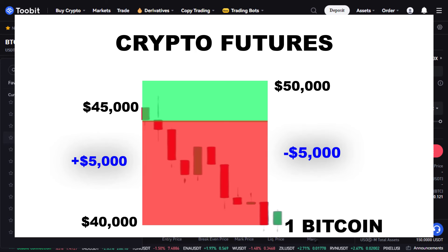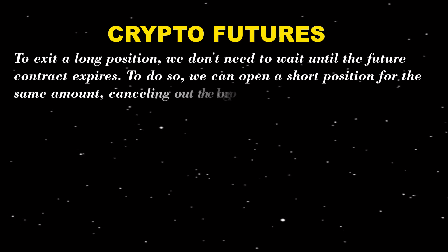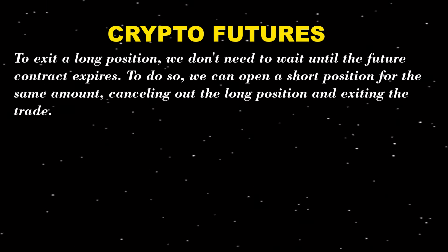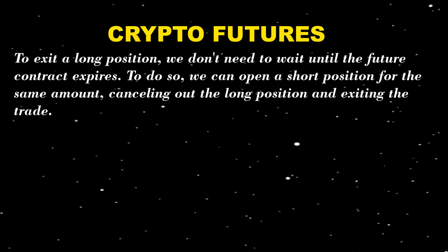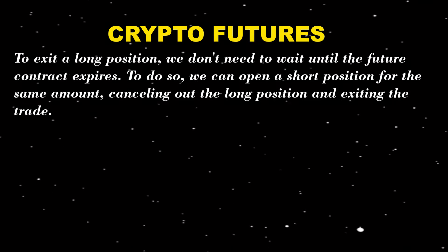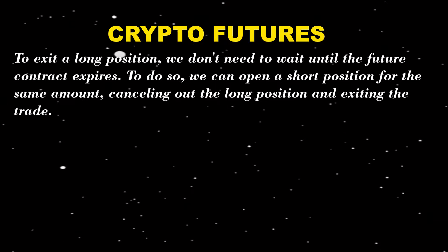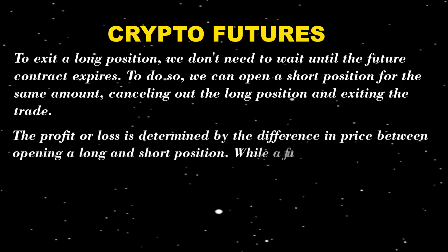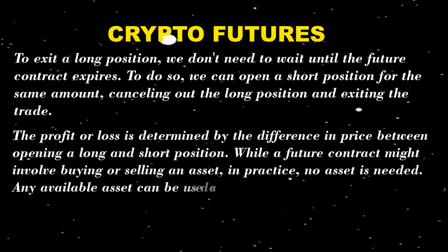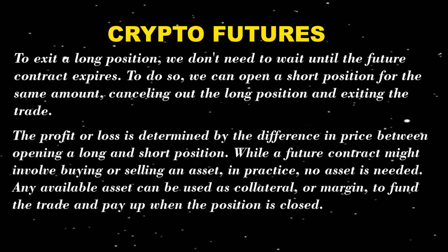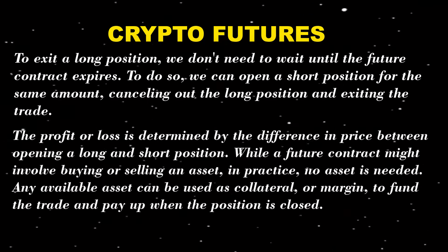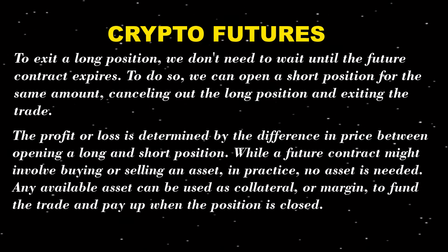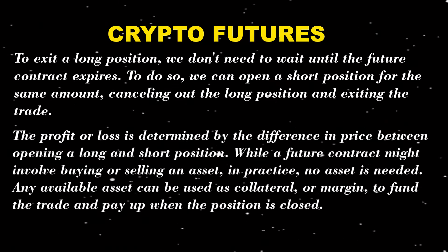With futures trading, we are basically speculating whether the price of an asset will go up or down. In practice, we don't actually need to wait until the contract expires. To close a long position, all we need to do is open a short position for the exact same amount — that cancels out the long and gets us out of the trade. The profit or loss is equivalent to the difference in price between when we opened the long and when we opened the short.